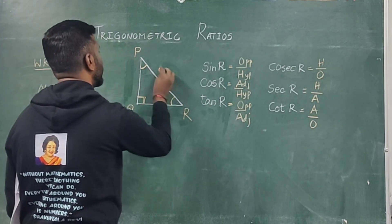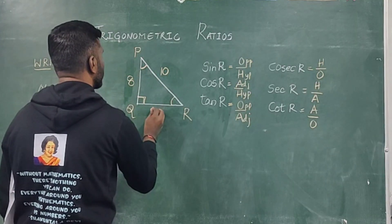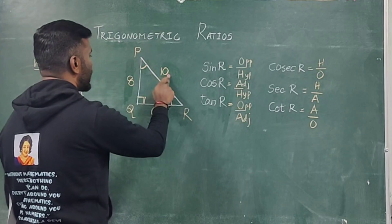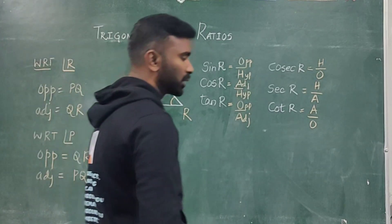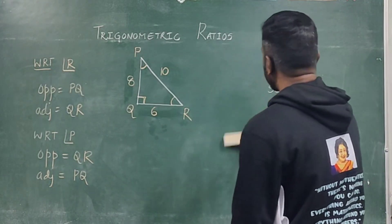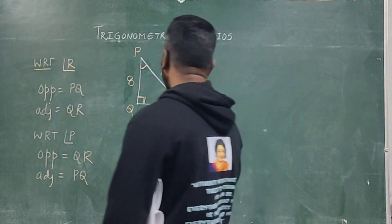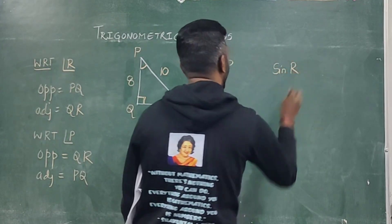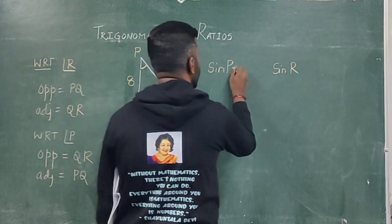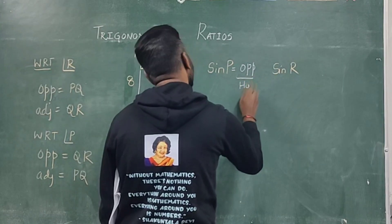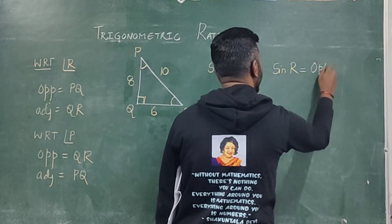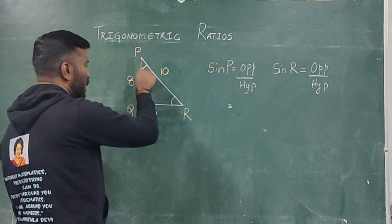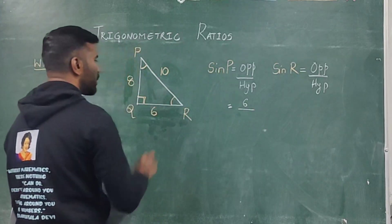If the examination asks: find the value of sin P and sin R. Sin is opposite by hypotenuse. With respect to angle P, the opposite is 6 and the hypotenuse is 10, so sin P = 6/10. With respect to angle R, the opposite is 8 and the hypotenuse is 10, so sin R = 8/10.